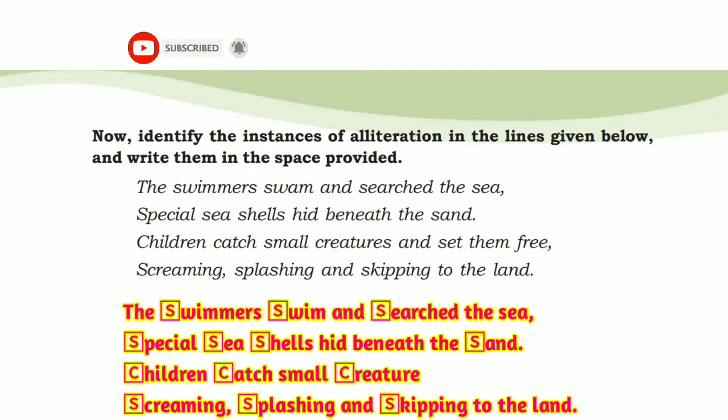Now identify the instances of alliteration in the lines given below: 'The swimmers swam and searched the sea. Special seashells hid beneath the sand. Children catch small creatures and set them free. Screaming, splashing, skipping to the land.' Alliteration: Swimmers, Swam, Searched, Sea. Special, Sea, Shell, Sand. Children, Catch, Creature. Screaming, Splashing, Skipping.